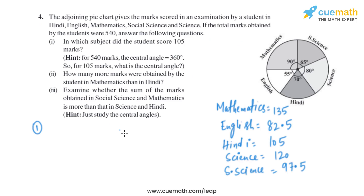We now have the marks for all subjects. For Part 1 — in which subject did the student score 105 marks? — as we can see, in Hindi the student scored 105 marks.